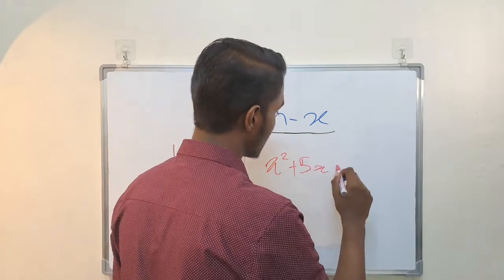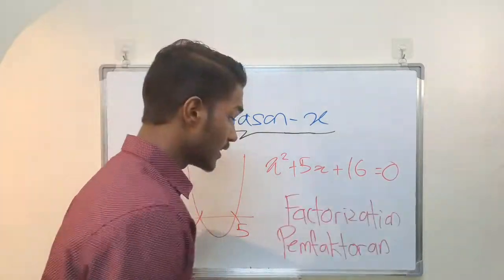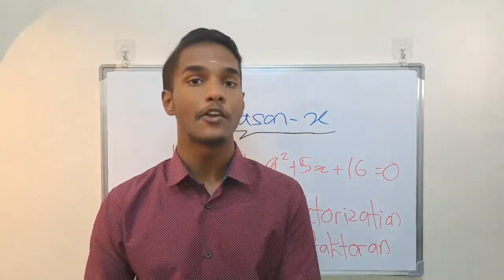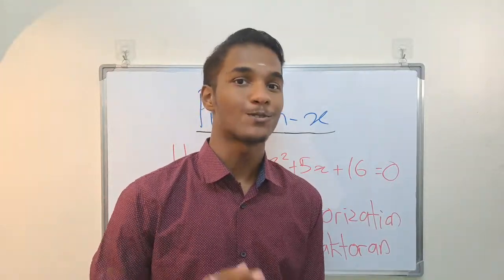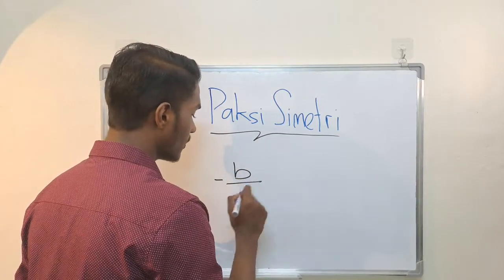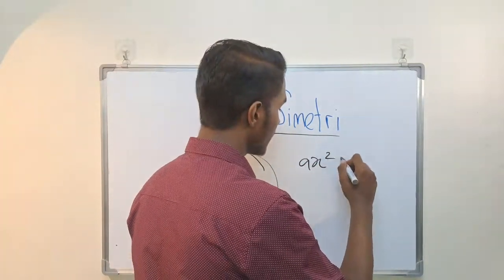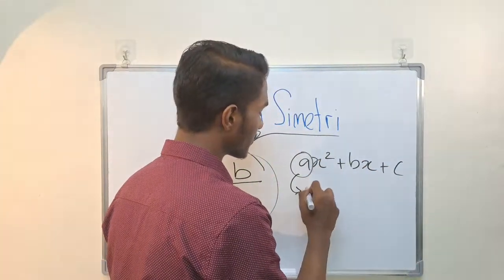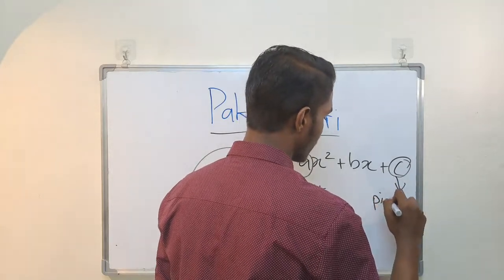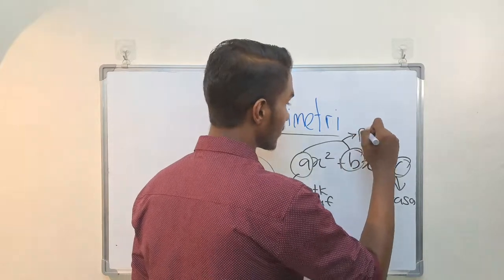For the x-intercept, we use factorization. For example, x² plus 5x plus 16 equals 0. If you factorize, the answer gives the x-intercept. We will see this clearly and also the symmetry.